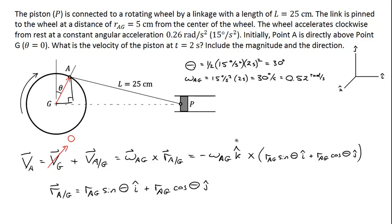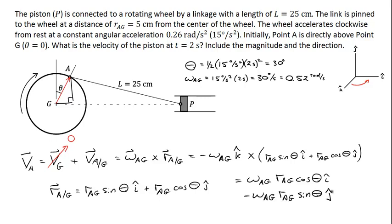Let's cross k-hat with the j-hat direction. Going from k-hat to j-hat with the right-hand rule gives a negative sign. So I have negative times negative omega AG, which is positive omega AG times RAG cosine theta in the i-hat direction. Crossing k-hat with i-hat gives a positive j-hat direction, so we keep a negative sign: minus omega AG times RAG sine theta in the j-hat direction.